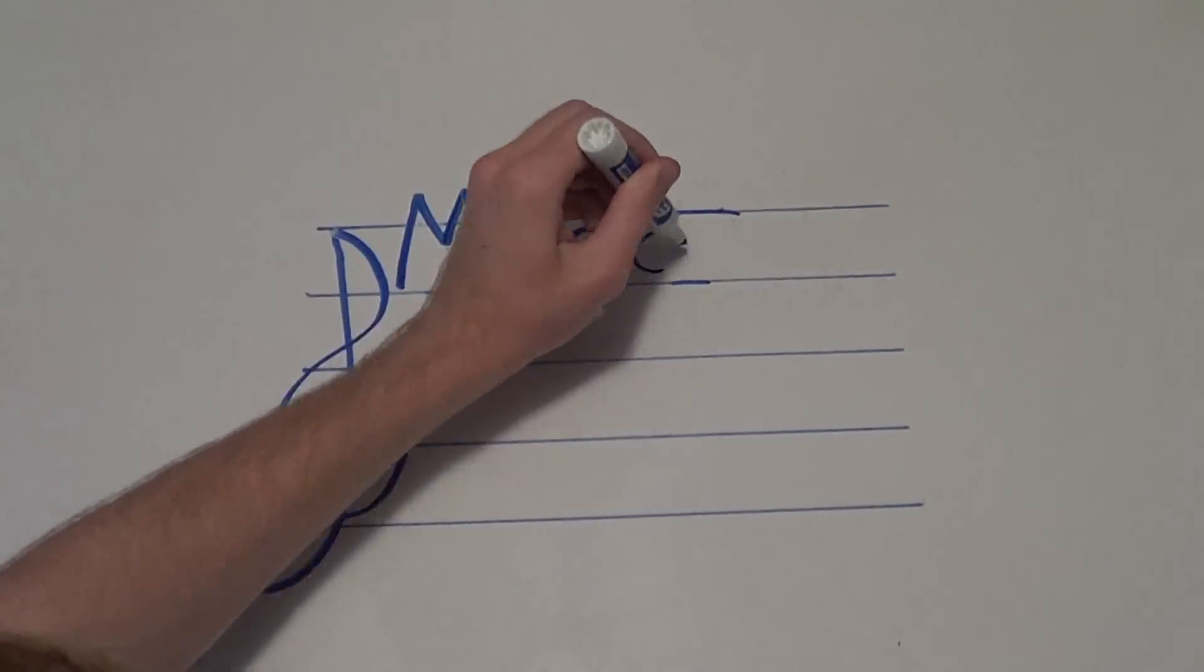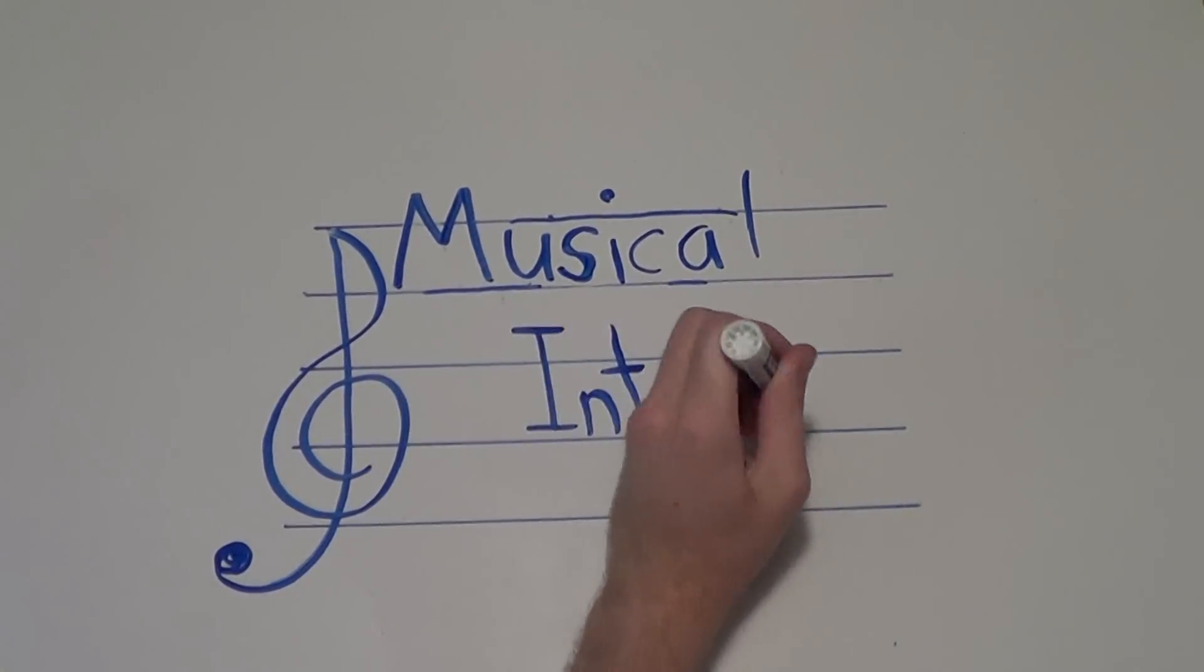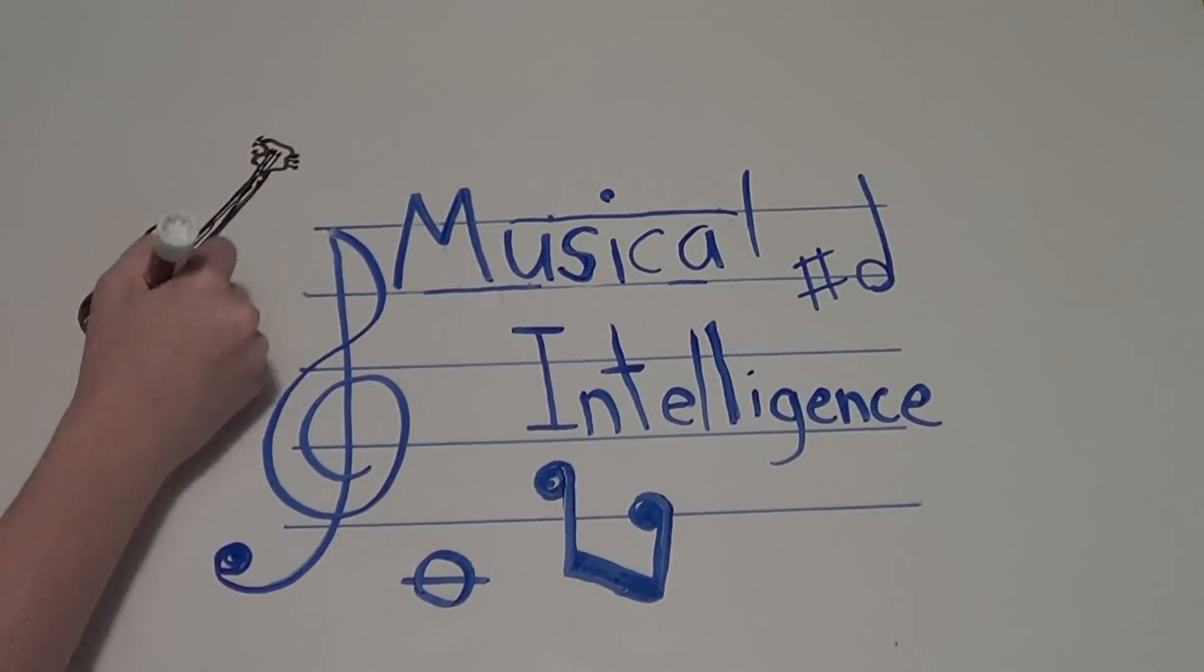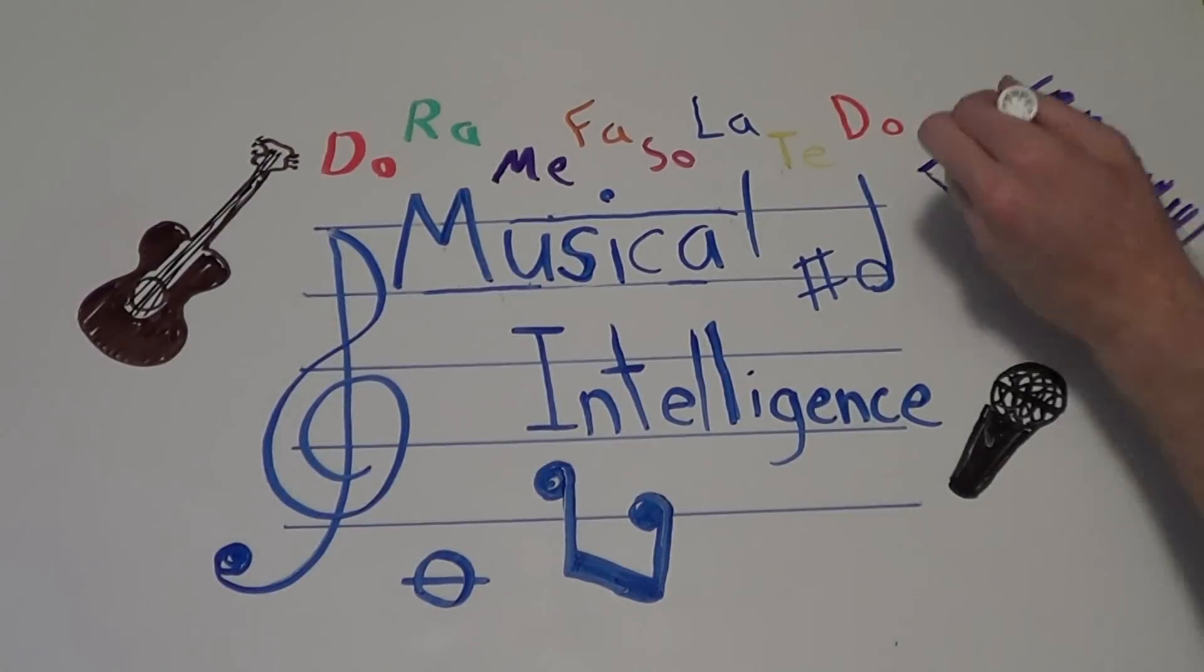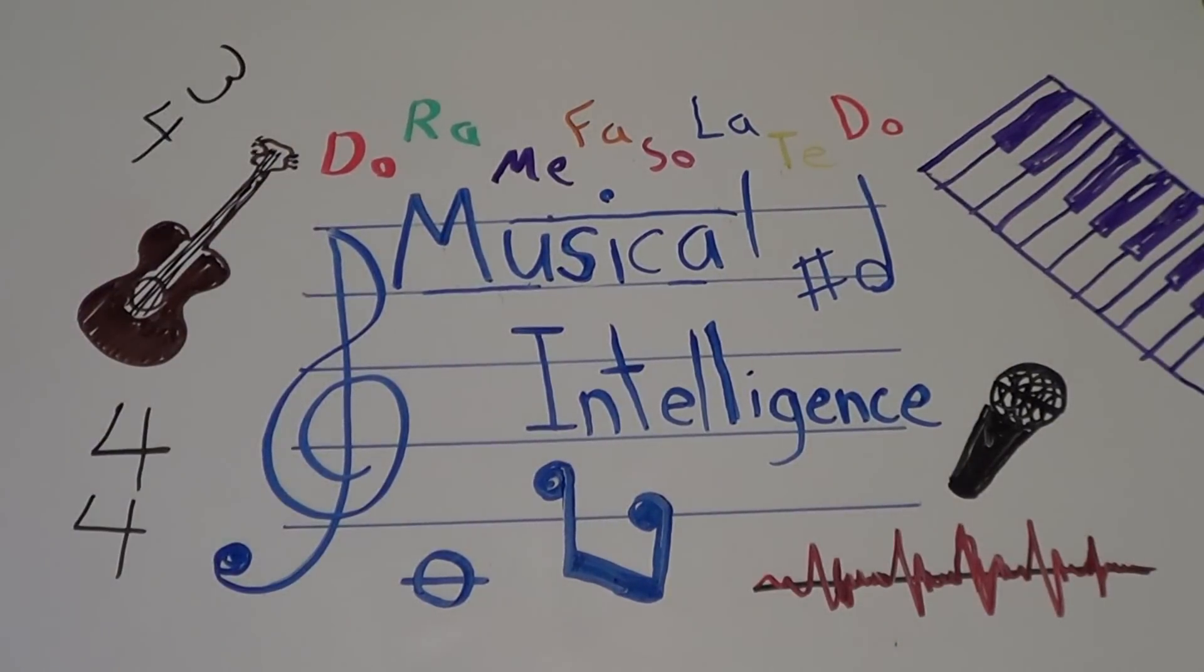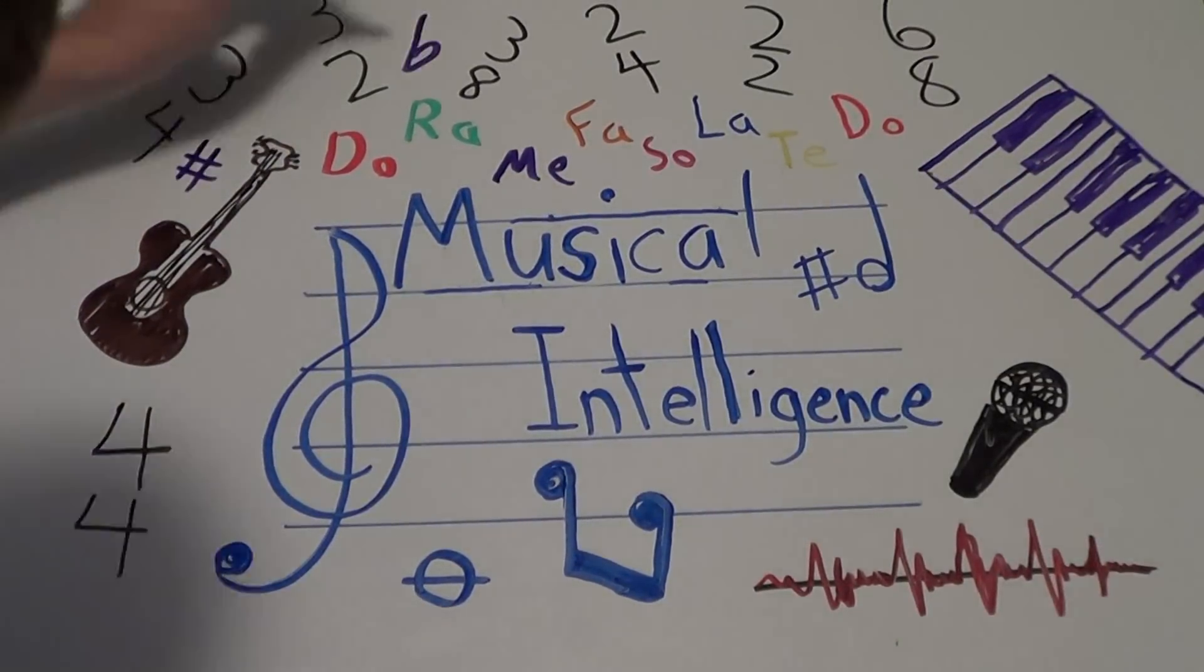Musical intelligence covers the capacity to discern pitch, rhythm, timbre, and tone. Music-smart people like Mozart, Elvis Presley, and Madonna have the ability to recognize, create, reproduce, and reflect on music through experiencing a deep connection between music and emotion.